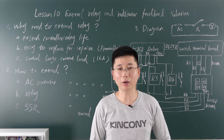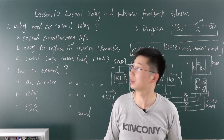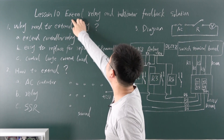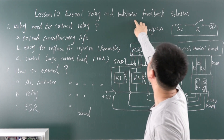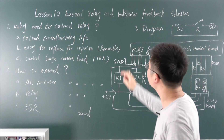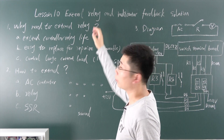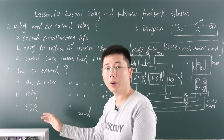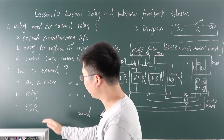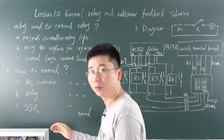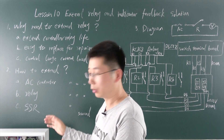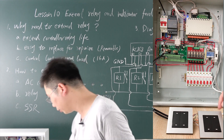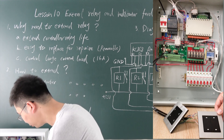Hello everyone, this is King Kong IoT lessons, lesson 10: Extended Relay and Indicator Feedback Solution. In this video I will show you how to make a power distribution box where we can get the relay state feedback to the switch panel.